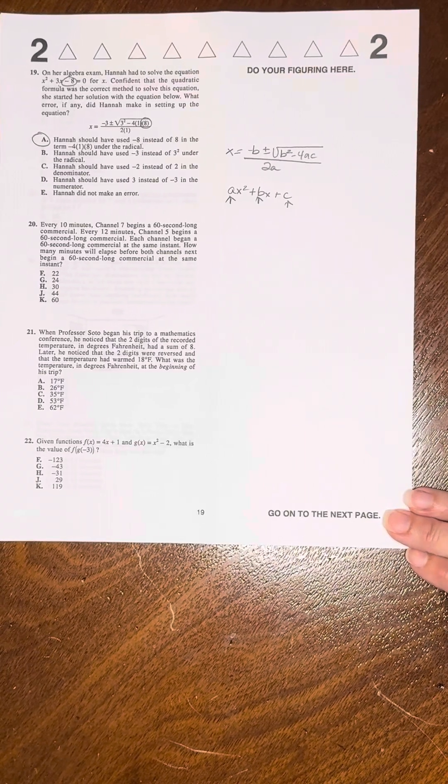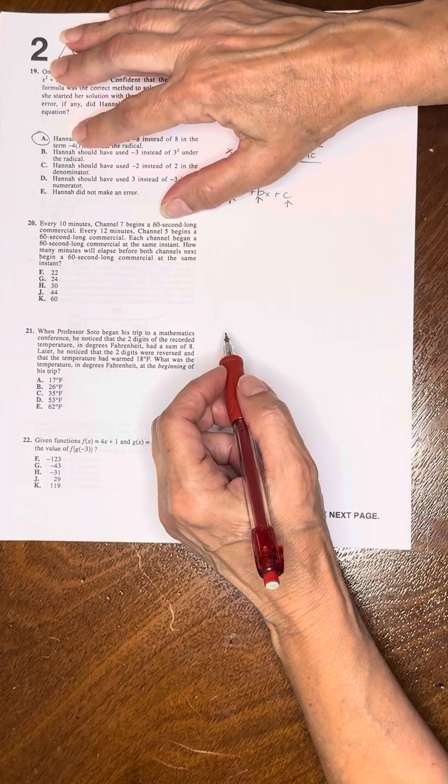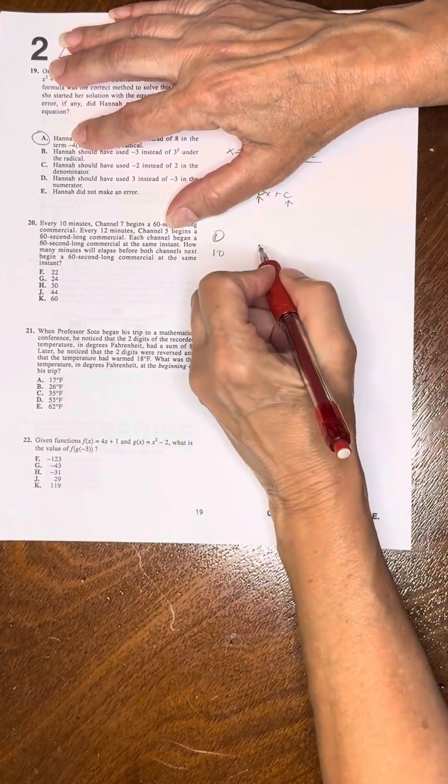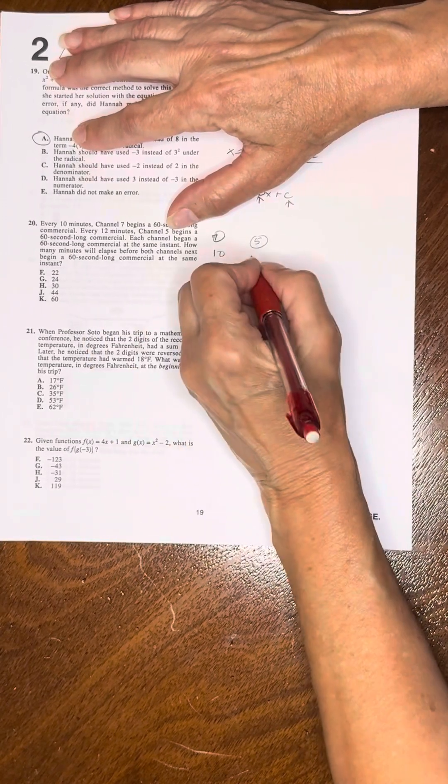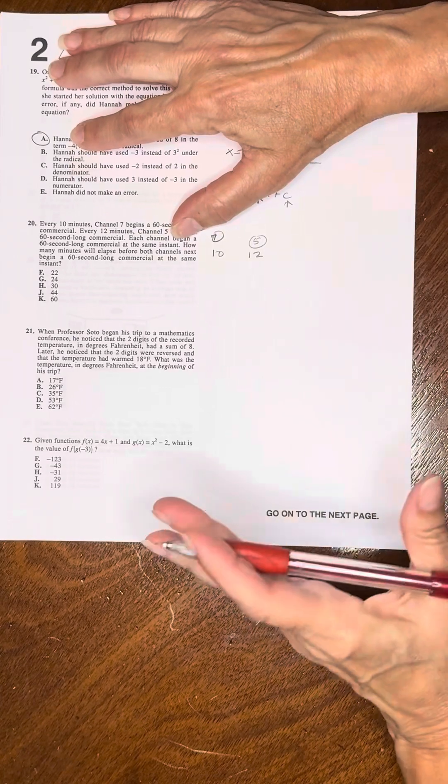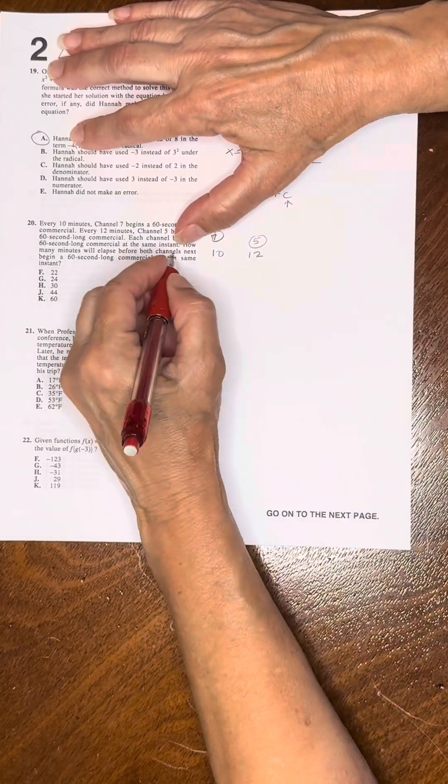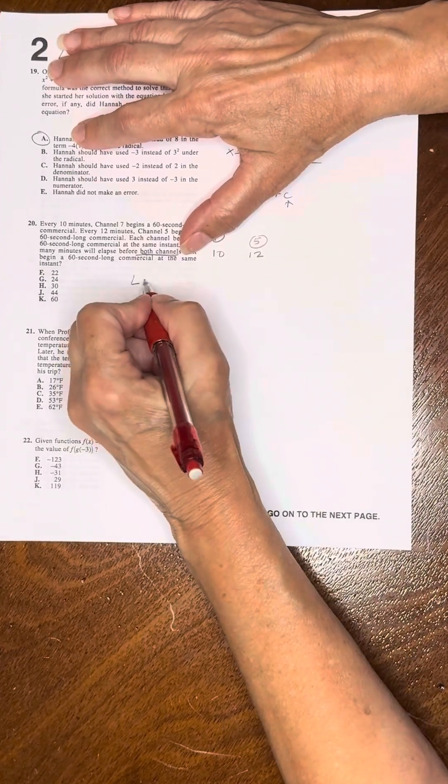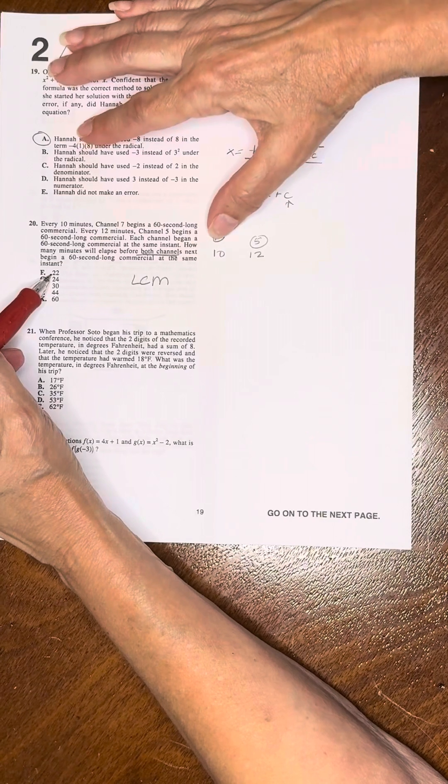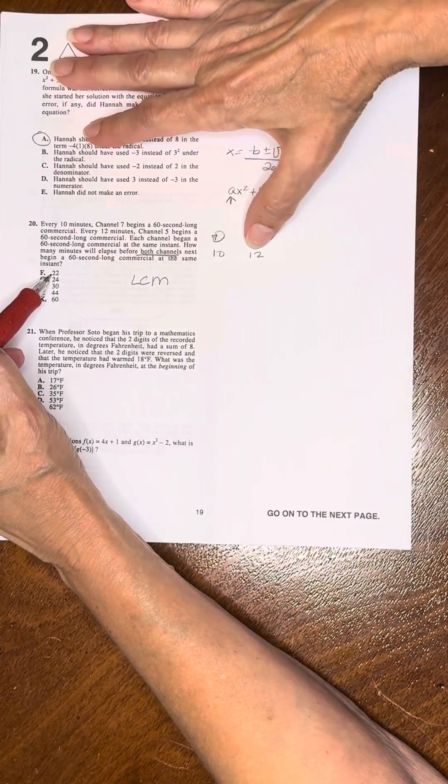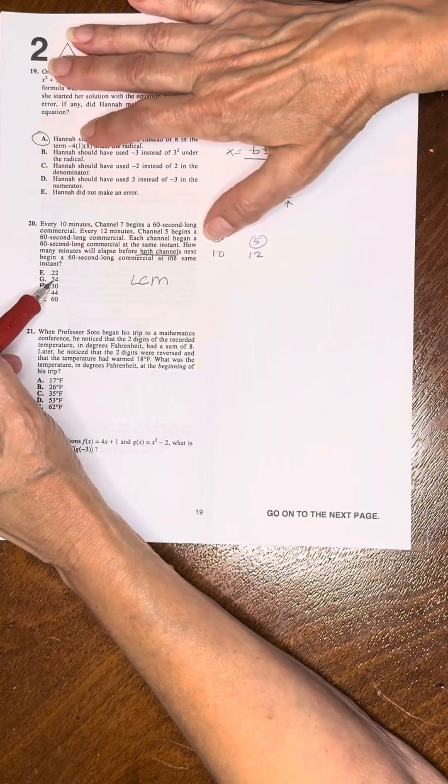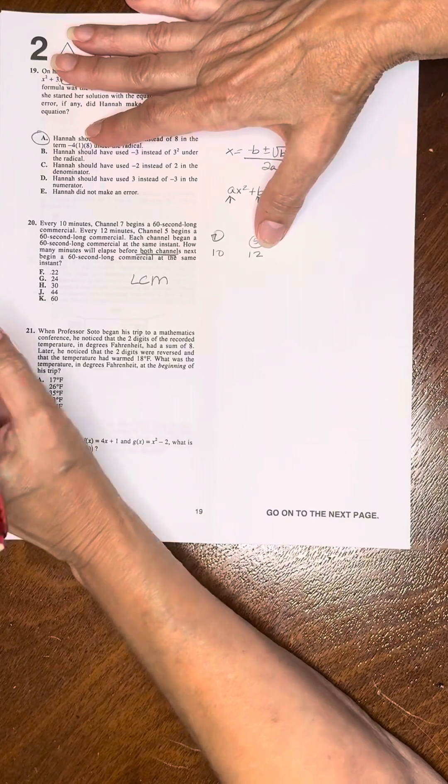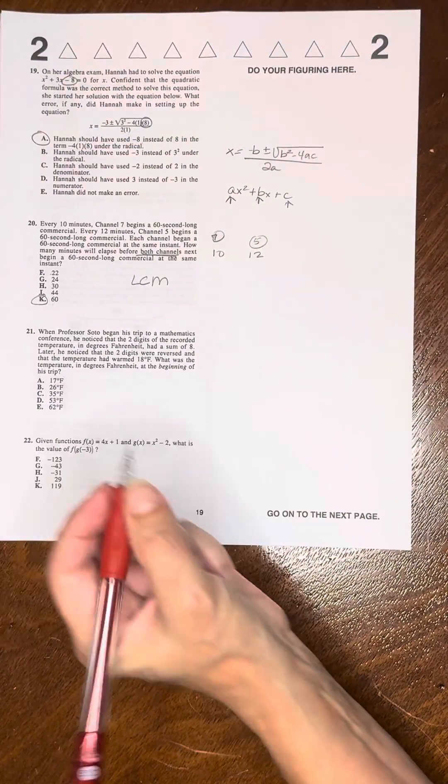Number 20: Every 10 minutes, channel 7 begins a 60 second long commercial. Every 12 minutes for channel 5. How many minutes will lapse before both of the channels begin the commercial at the same time? So it's asking for the least common multiple. We start with the smallest numbers and ask if both of these numbers are multiples of it. 2, no. 4, 12 is but 10 is not. 30, 10 is but 12 isn't. 44, neither one of them are. 60, both of them are multiples. That's the solution. Number 60, a least common multiple question.